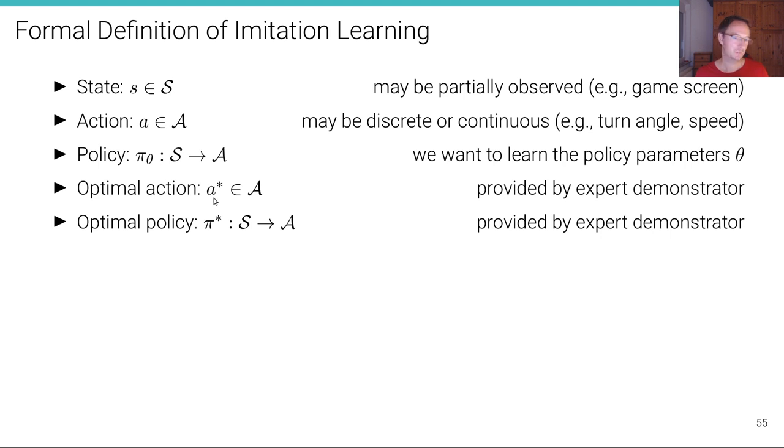We also have the optimal action, which we indicate with a star. This is the action that the expert demonstrator provides or conducts or makes for a particular observation or state S. And we have an optimal policy. This is basically the expert. We call it π star. This is what the expert would decide for every input state S. So it maps to the optimal action A star.